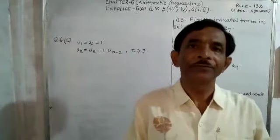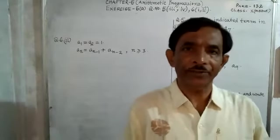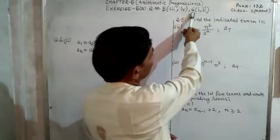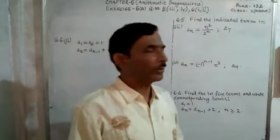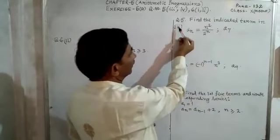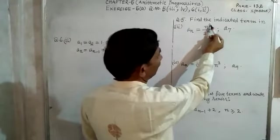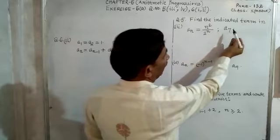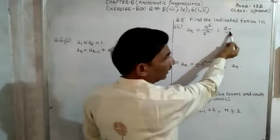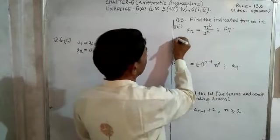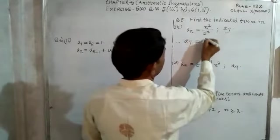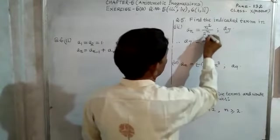Hello dear students, we will learn arithmetic progressions — question number five, sub-numbers three and four, and question number six, sub-numbers one and two. Look at question number five: find the indicated term. Sub-number three: aₙ = n² / 2ⁿ. We have to find a₇. To find a₇, the value of n is 7. Therefore, a₇ — here n is 7.